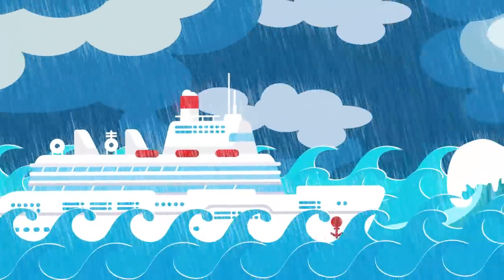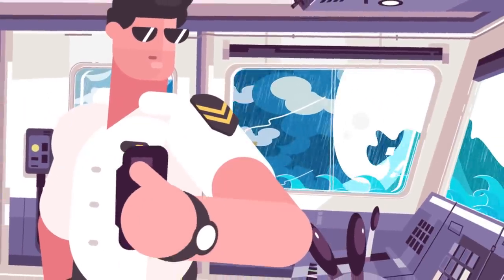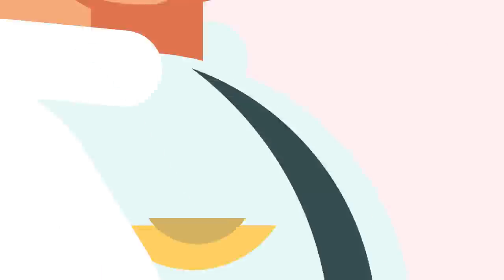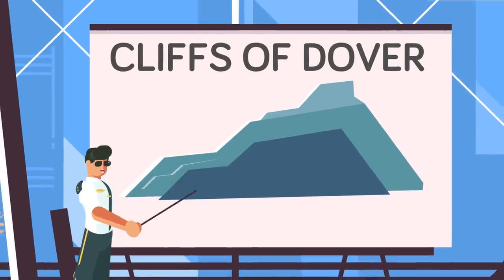Then, in February 1995, the ocean liner Queen Elizabeth II encountered a 95 foot wave, which the captain compared to the cliffs of Dover.